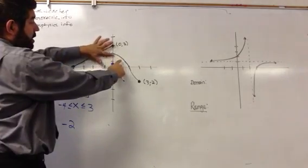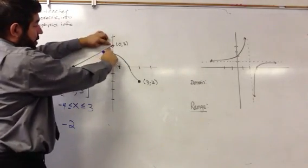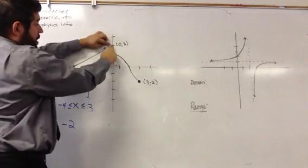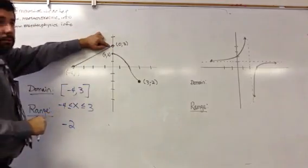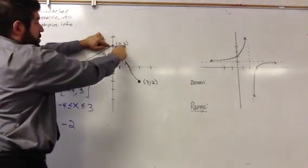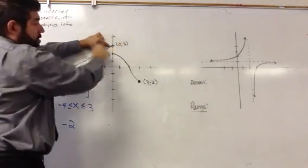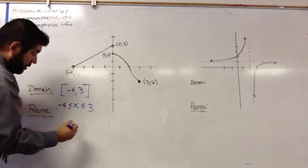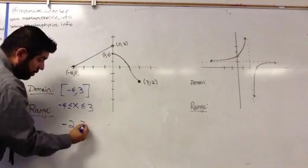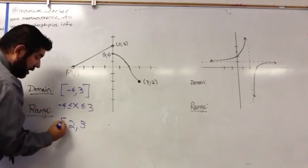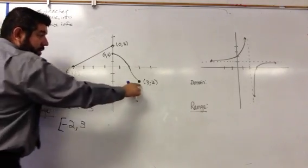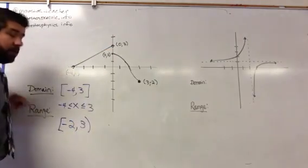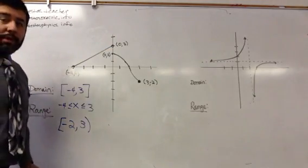We're going to continue. There's a break here, but this y value is still in this graph. And then our highest y value is 3, but actually it doesn't include 3 because this is an open circle. So I'm going to go to 3. It includes negative 2 but does not include 3, so we're going to use an open parenthesis.